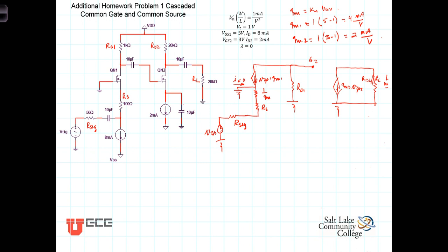We have our two stages reduced to the small signal model and we're ready to start our analysis. Both current sources depend on the gate-to-source voltage of each transistor. VGS1 is referenced positive at the gate and negative at the source. VGS2 is the voltage from the gate of the second transistor to ground, since its source is grounded. So VGS2 is simply the voltage across RD1.